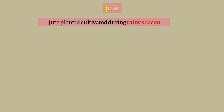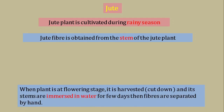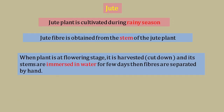Second is jute. Jute plant is cultivated during the rainy season, and jute fiber is obtained from the stem of the jute plant. When the plant is at the flowering stage, it is cut down and its stems are immersed in water for a few days. Then loosened fibers are separated from the stem by hand and used to make fabric.